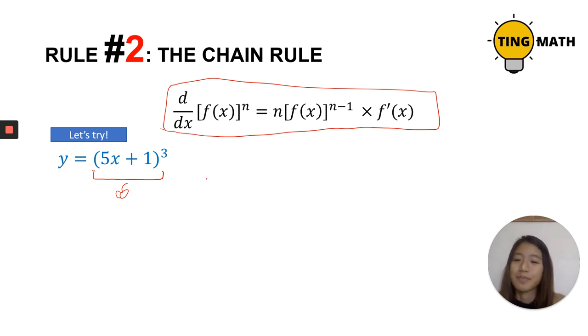So dy over dx here. This is apple cube. So what happens is we bring down the power, 3, and then the apple remains the same. So it's 5x plus 1. And then this, the power here, 3. Remember, we used that one ammo. So we have to minus 1. That gives us 2.